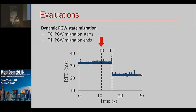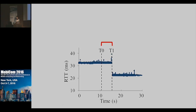This is the P-Gateway state migration. It starts at T0, takes a couple of seconds, and finishes at T1. The drop in RTT shows P-Gateway migration from a location farther away from the mobile user to one closer to the user. Between T0 and T1, a couple of steps take place. We have the service topology and P-Gateway at the source location, say in San Francisco.